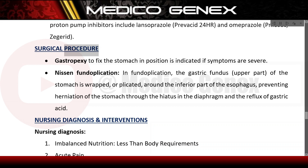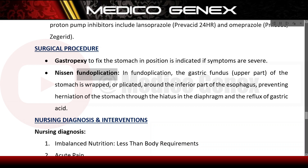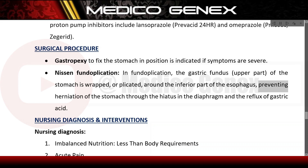Surgical procedure. Gastropexy to fix the stomach in position is indicated if symptoms are severe. Nissen fundoplication: in fundoplication, the gastric fundus — the upper part of the stomach — is wrapped or plicated around the inferior part of the esophagus, preventing herniation of the stomach through the hiatus in the diaphragm and the reflux of gastric acid.